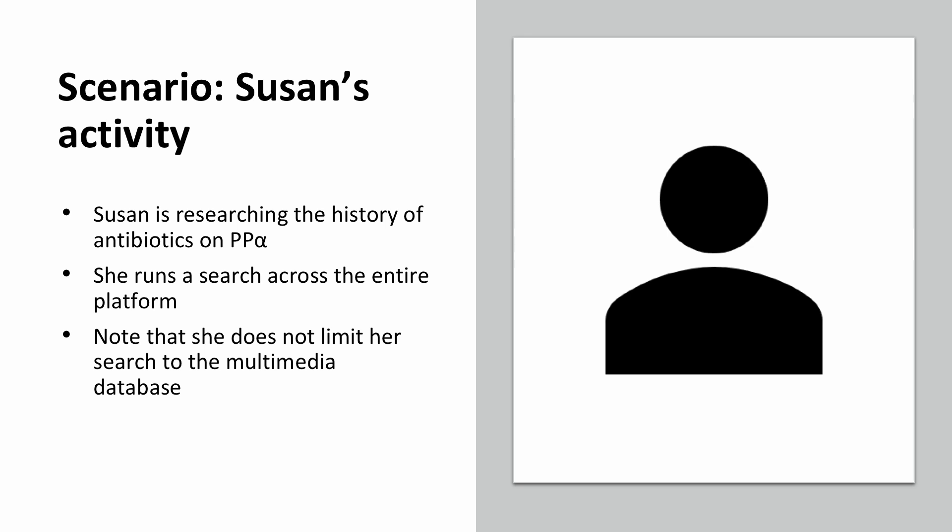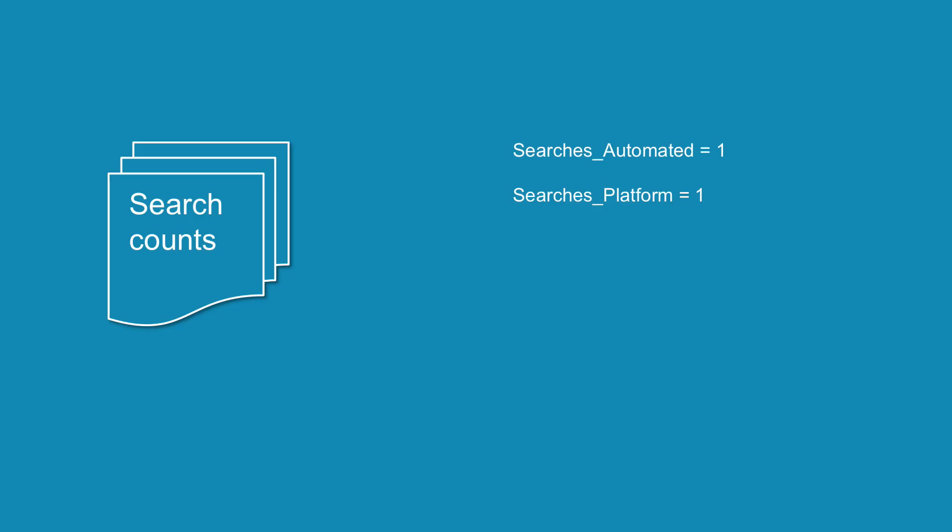Susan is a researcher at Omega. She is researching the history of antibiotics on Alpha, and runs a search across the entire platform. Note that she does not limit her search to the multimedia database. The counts for the search she has run are Searches Automated 1 and Searches Platform 1.